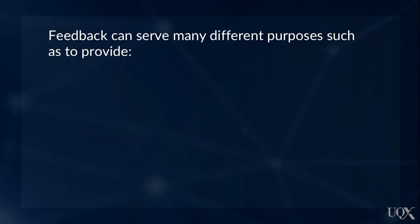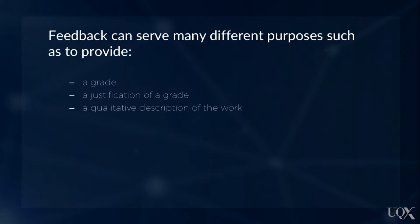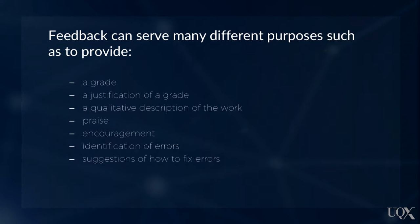Numerous variables are identified in feedback literature that affect how feedback is received and used by students. These include the purpose, focus, and timing of feedback. Feedback can serve many different purposes, such as to provide a grade, a justification of a grade, a qualitative description of the work, praise, encouragement, identification of errors, suggestions of how to fix errors, and guidance on how to improve the work standard.